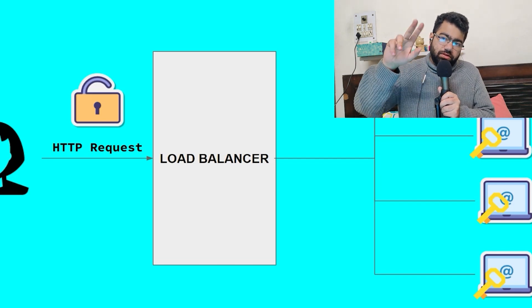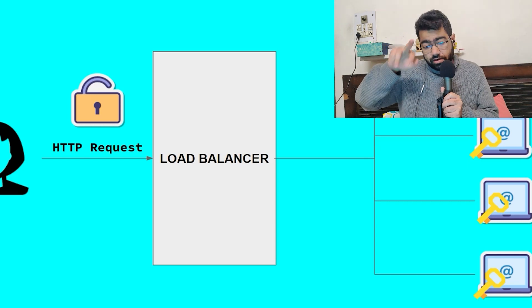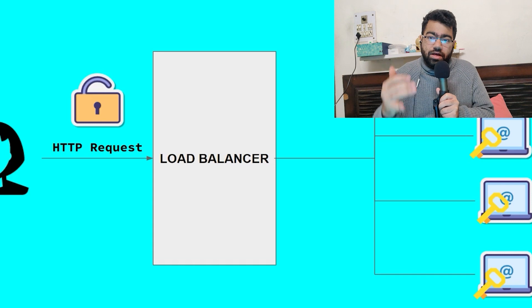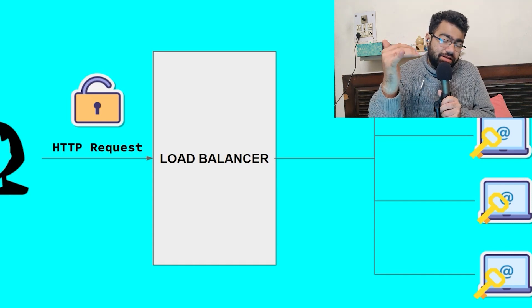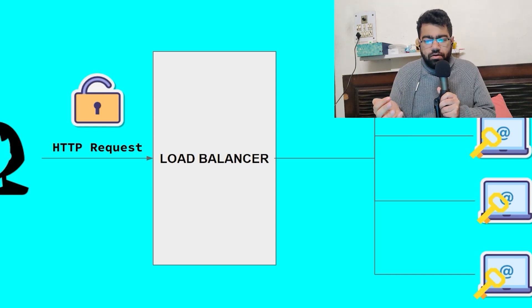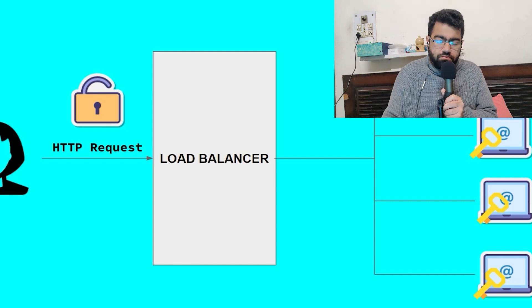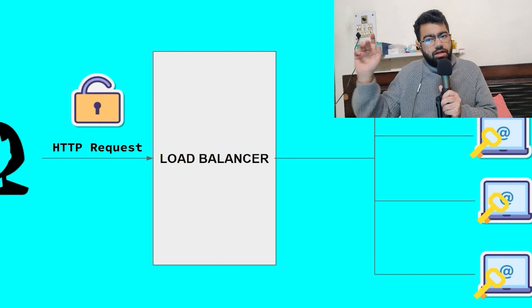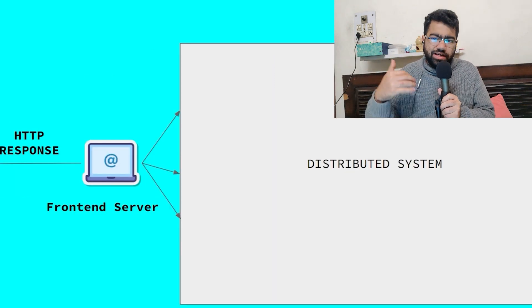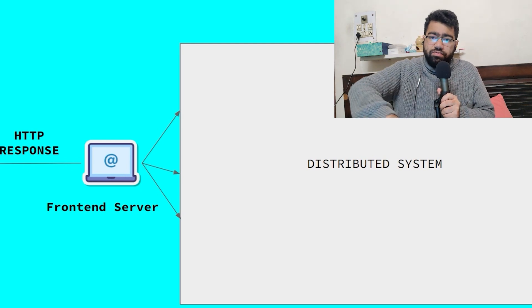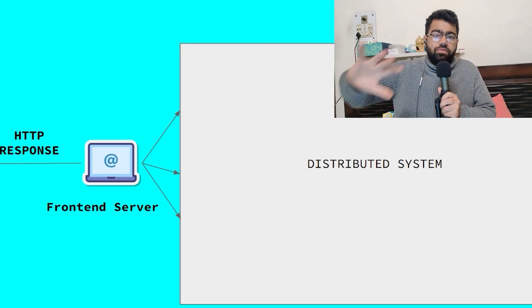Load balancers are also of different types: Layer 7 and Layer 4. Layer 7 load balancers have all the information about the request at the application layer, so they can make intelligent decisions. Layer 4 load balancers can only make decisions based on data available at the transport layer. I've created a full playlist on load balancers — I'll link it here. So your HTTP request goes to the frontend server through the load balancer and finally reaches the backend of the complete app.